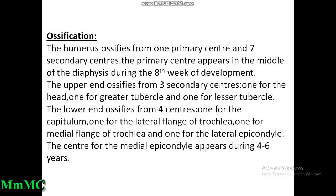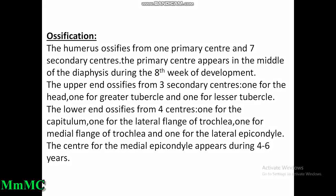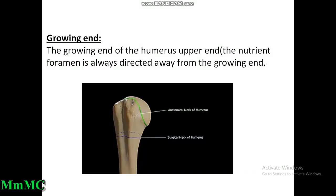The lower end ossifies from four centers: one for the capitulum, one for the lateral flange of the trochlea, one for the medial flange of the trochlea, and one for the lateral epicondyle. The center for the medial epicondyle appears during four to six years. The growing end of the humerus lies at the upper end. The nutrient foramen is always directed away from the growing end.